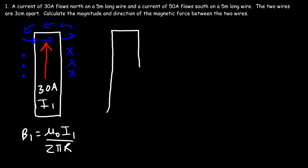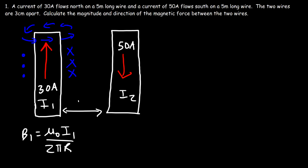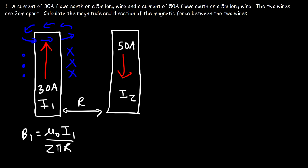Now let's place a second wire next to it with a current of 50 amps flowing south — call this I2 — separated by a distance R. This current will generate a magnetic field which exerts a force on the moving charges in that wire. To calculate the magnetic force on a wire, it's F = I L B sine theta. Because the magnetic field is going into the page (negative z) and the current flows south (negative y), the angle between them is 90°, so sine 90 = 1, giving F = I L B.